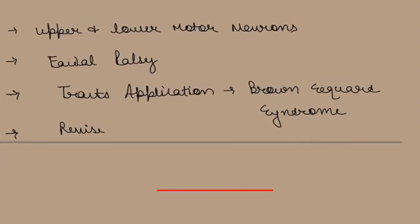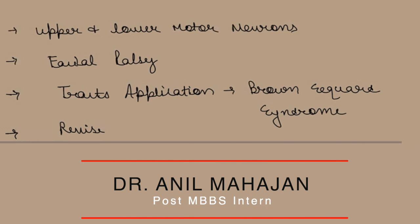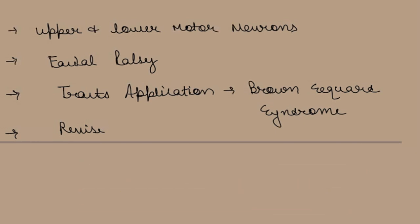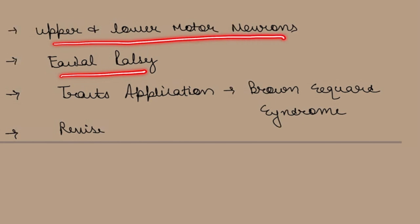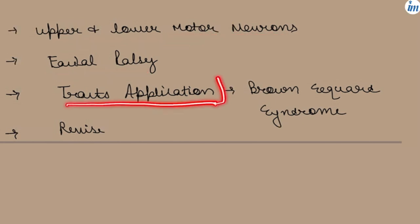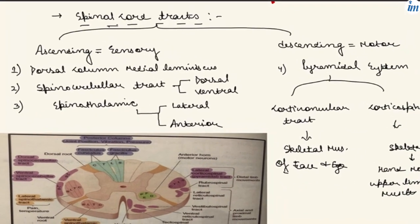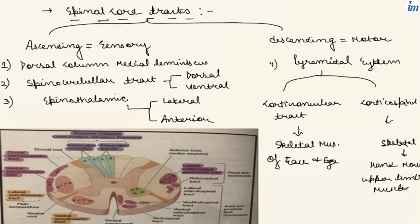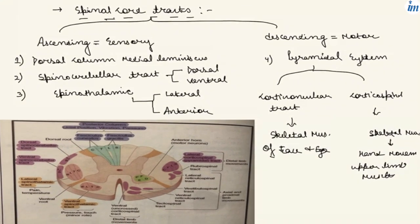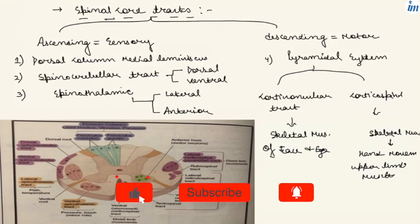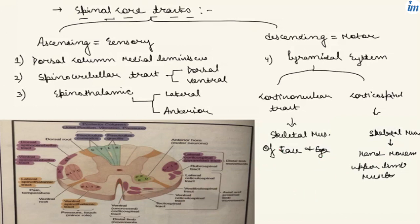Hello guys, welcome to Inspiring Minds. This is Dr. Anil Mahajan. In the last section I promised we will discuss about the upper and lower motor neuron concept. In this video we will talk about facial palsy, upper and lower motor neurons, all the tracts of the spinal cord, their applications, and Brown-Séquard syndrome, and we will revise it at the end. In the last section I discussed about the spinal cord tracts — the ascending and descending tracts. The ascending tracts are sensory tracts taking sensation to the higher centers, and the descending tract is the motor tract. I discussed the corticospinal tract and the corticonuclear tract, which come under the pyramidal system.